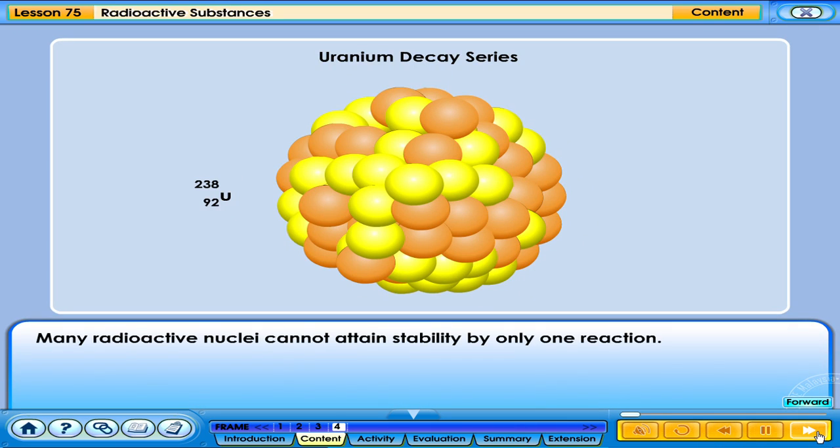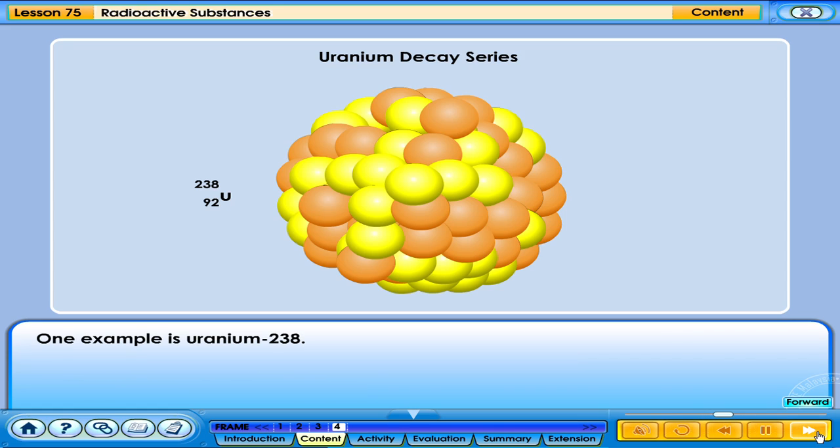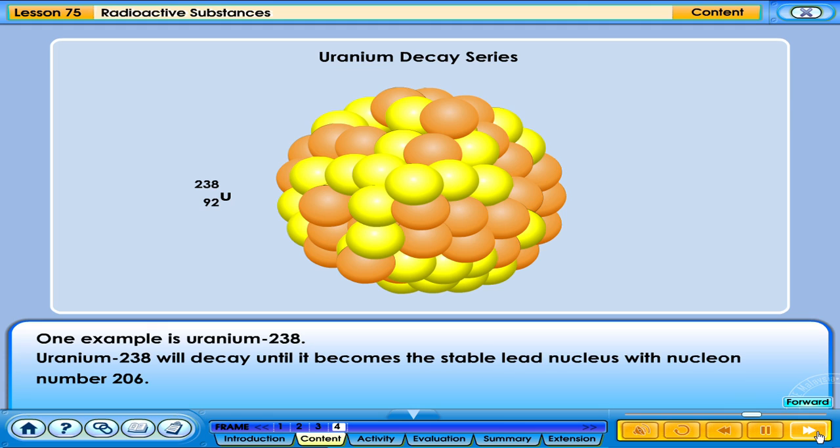Many radioactive nuclei cannot attain stability by only one reaction. They decay continuously until a stable nucleus is reached. A few are known to occur in nature. One example is uranium-238. Uranium-238 will decay until it becomes the stable lead nucleus with nucleon number 206. Click the uranium nucleus to start the decay.